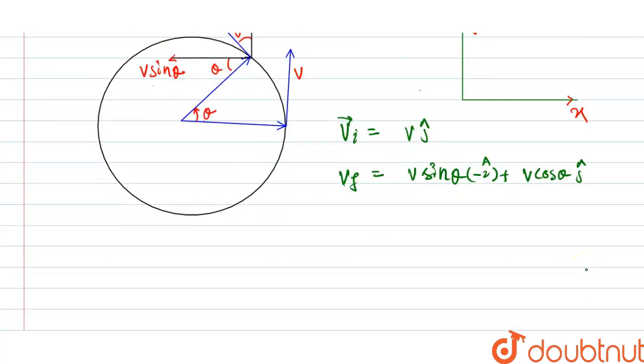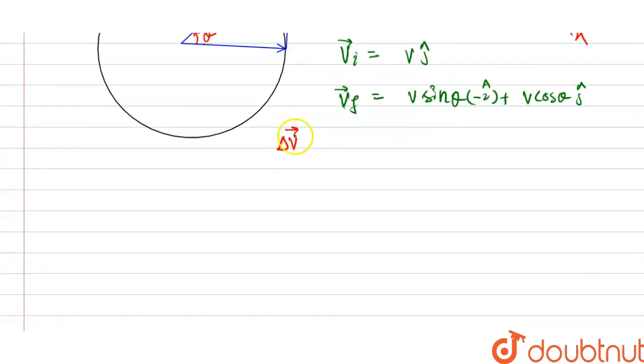Now change in velocity, that is del v equals v final minus v initial. So here our v final is minus v sine theta i cap plus v cos theta j cap minus v initial that is only v j cap. So from here we can further modify it as change in velocity equals minus v sine theta i cap plus v into cos theta minus 1 j cap.